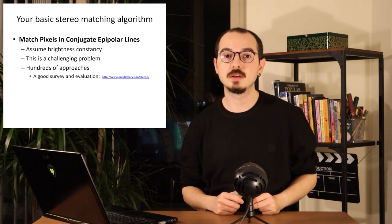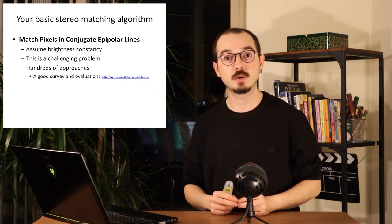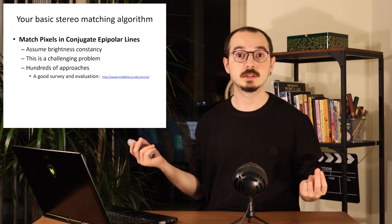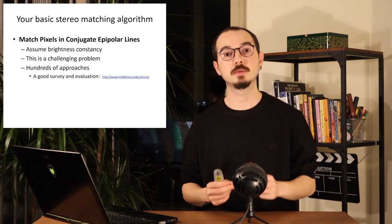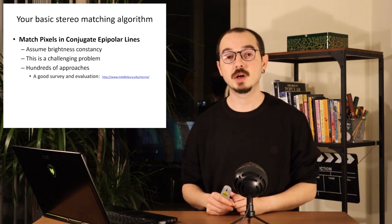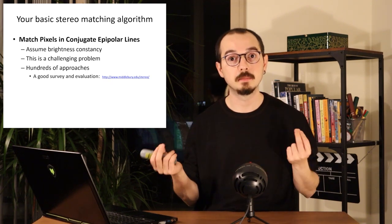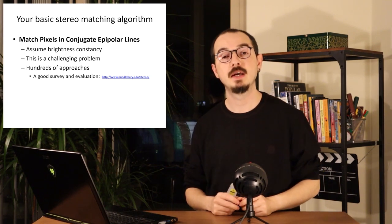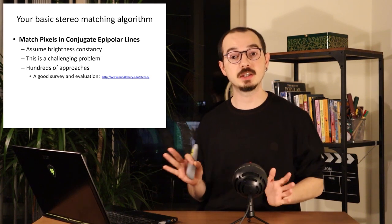Similar to many of our assumptions in point matching — with descriptors and interest points or even optical flow — we will assume brightness constancy, meaning the brightness of a pixel shouldn't change between the two views. When using two different cameras their brightness settings might differ slightly, so you need to account for that. Even with this assumption, it remains a challenging problem.